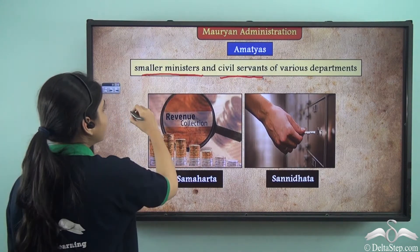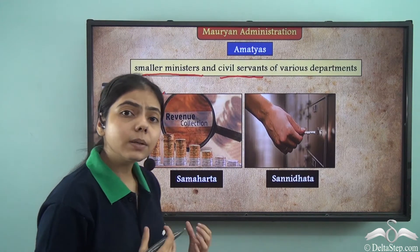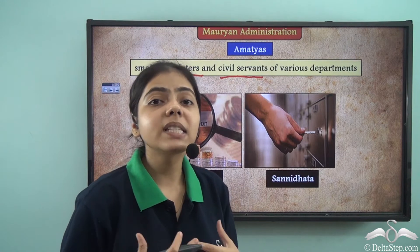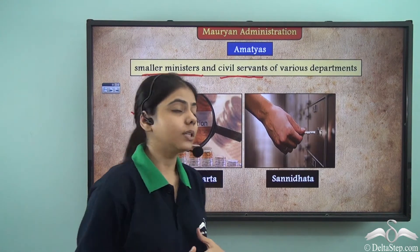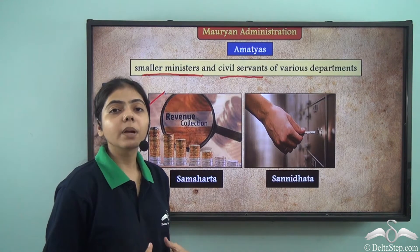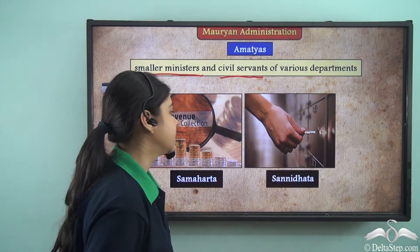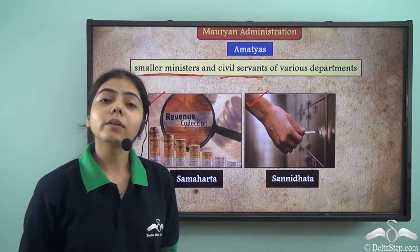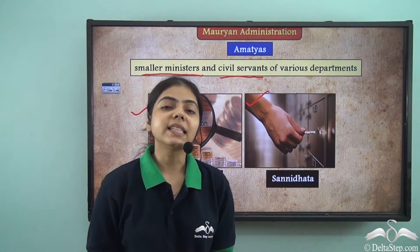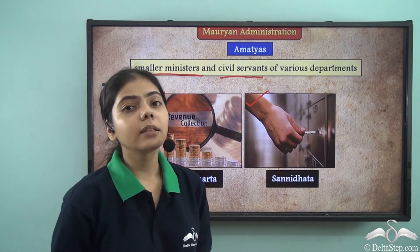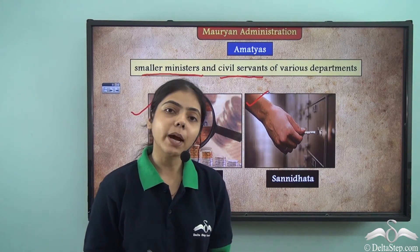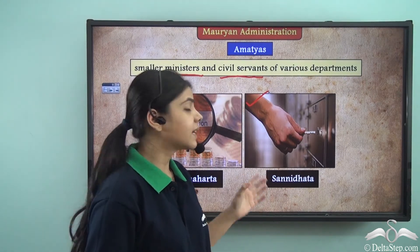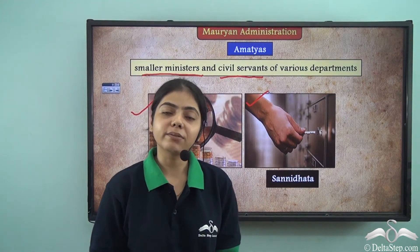One such department was the Samahartha, which ensured that revenue was collected and generated — similar to the finance department in today's Indian government. There was also the Sanidhata, whose role was to store and safeguard the wealth, similar to how the Reserve Bank of India safeguards our wealth today.